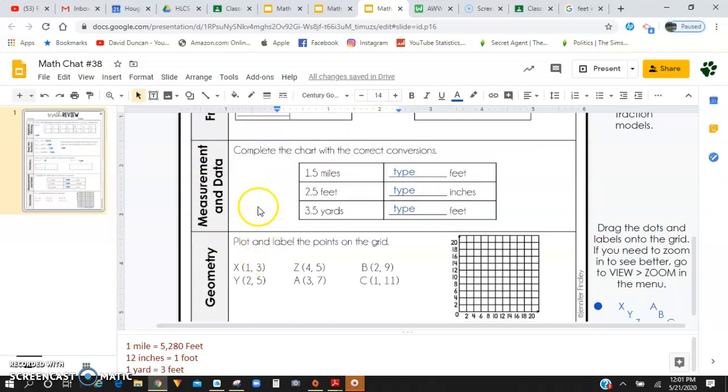All right, down here for measurement and data, you're going to do some breakup change, get back together problems. You are going to do some converting, and I gave you a little key down here for some information you're going to need. So in one mile, you have 5,280 feet, 12 inches is one foot, and one yard is three feet.